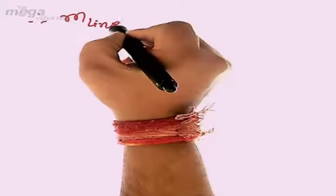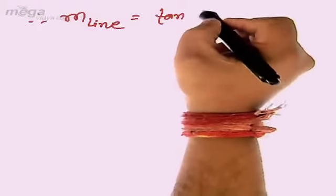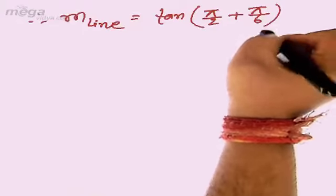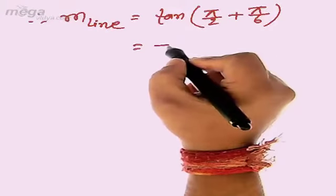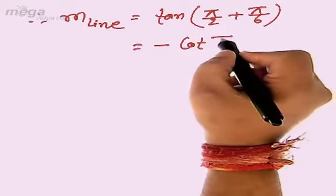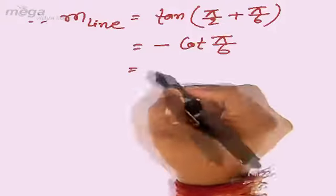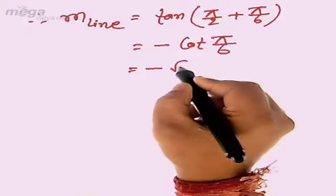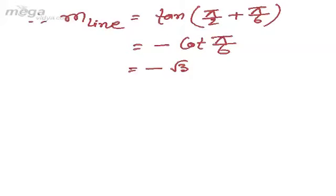Therefore, slope of the line is equal to tan(π/2 + π/6) which equals minus cot(π/6), and minus cot(π/6) is -√3. So slope of the line is -√3.